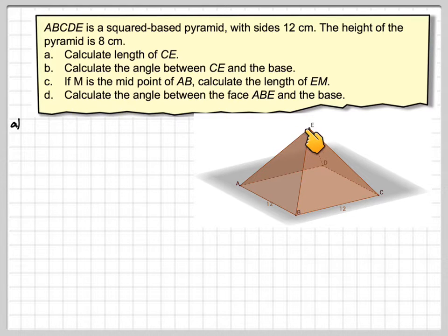We've got to find this length here, CE. Calculate the angle between CE and the base. We're going to have to calculate an angle down here. There's going to be a midpoint of AB, and then we're going to have to calculate EM. So that's going to be that distance there, and the angle that triangle makes with the base.